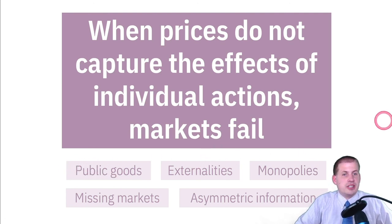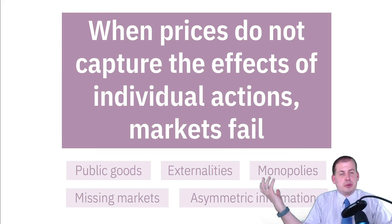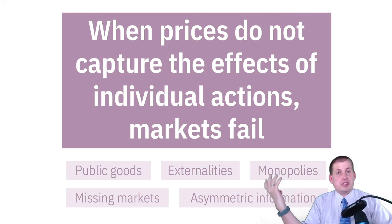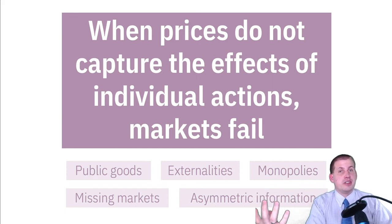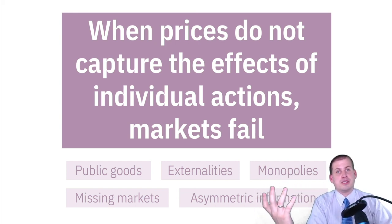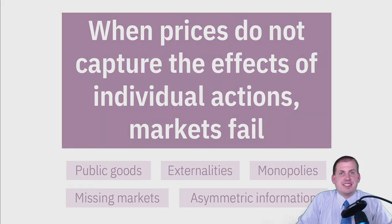Public goods and externalities are what we're going to be focusing on today — how these two situations represent cases where prices don't reflect individual actions, and how they can cause markets to fail. There will be an under-provision of products, goods, or services, which can be bad for society. So let's talk about public goods.